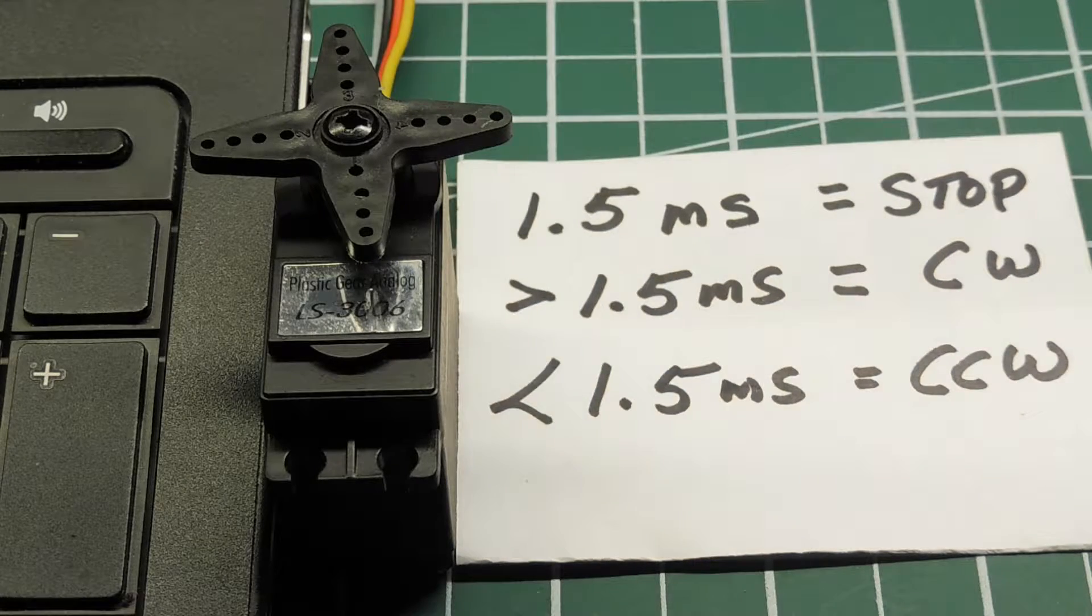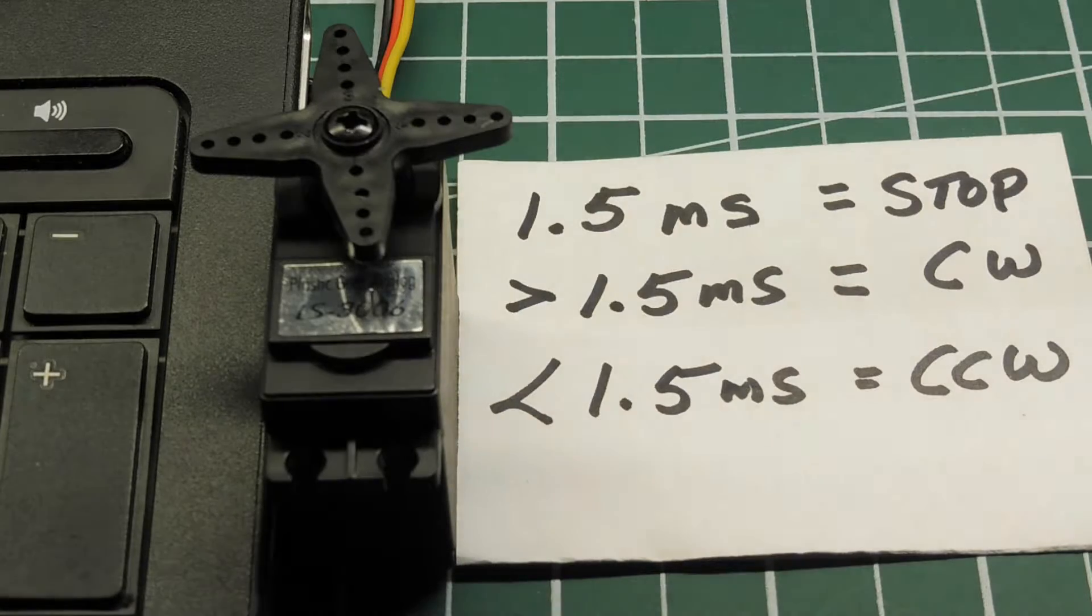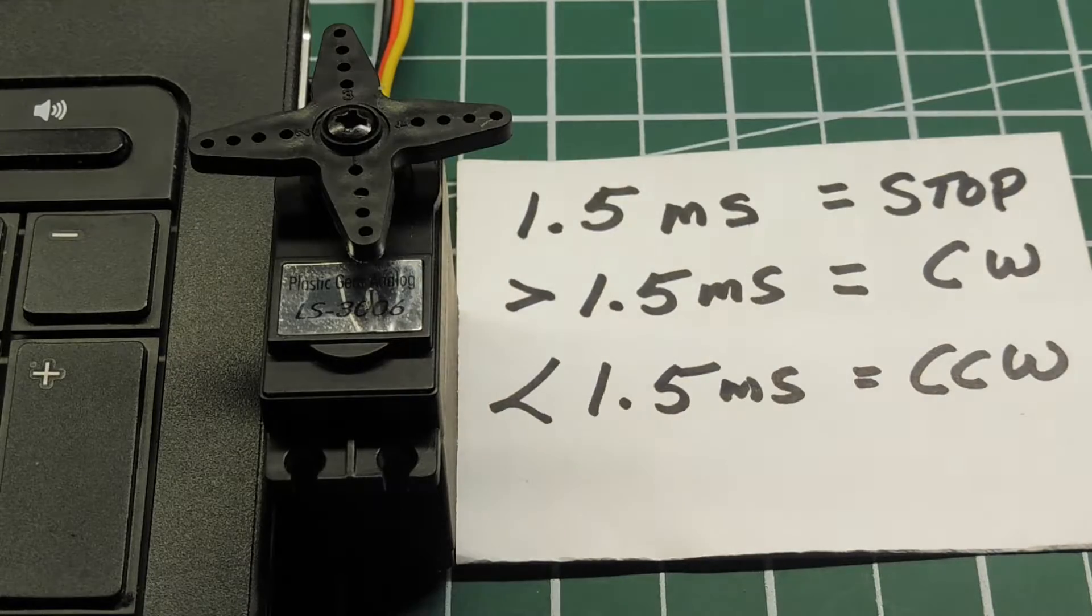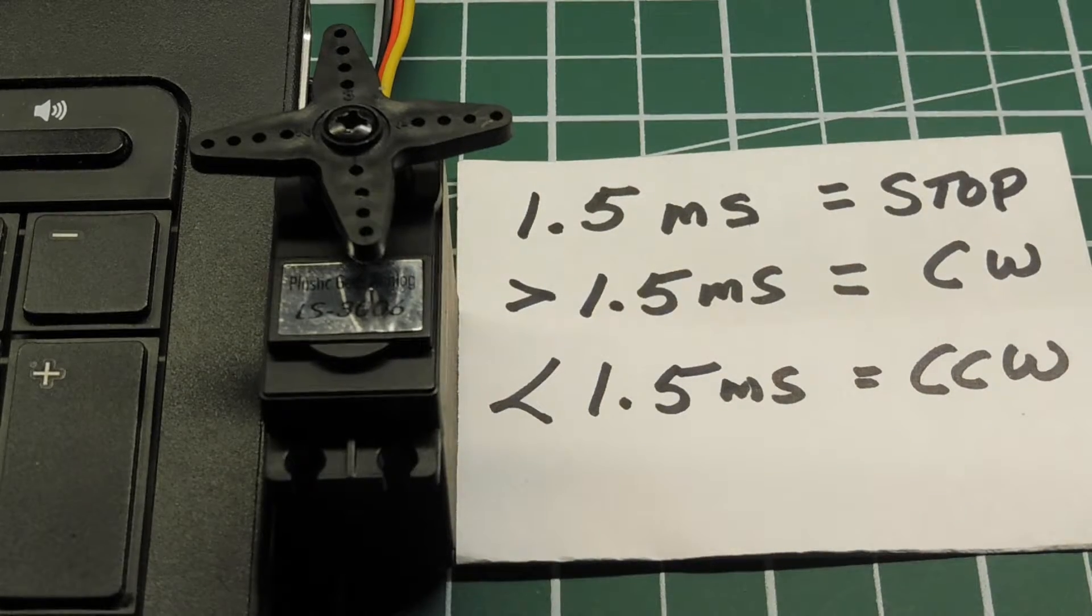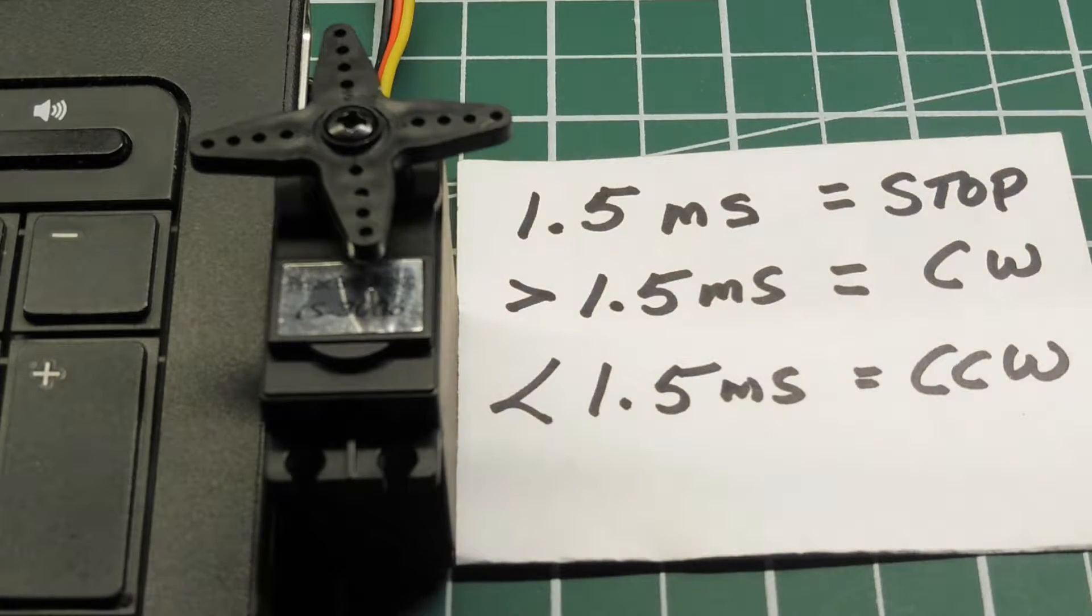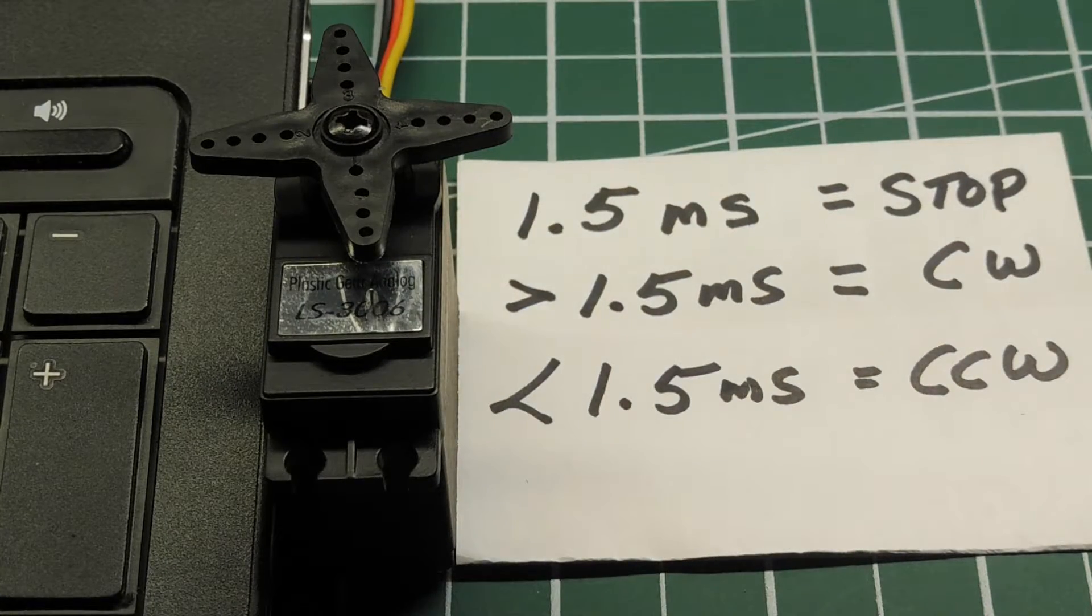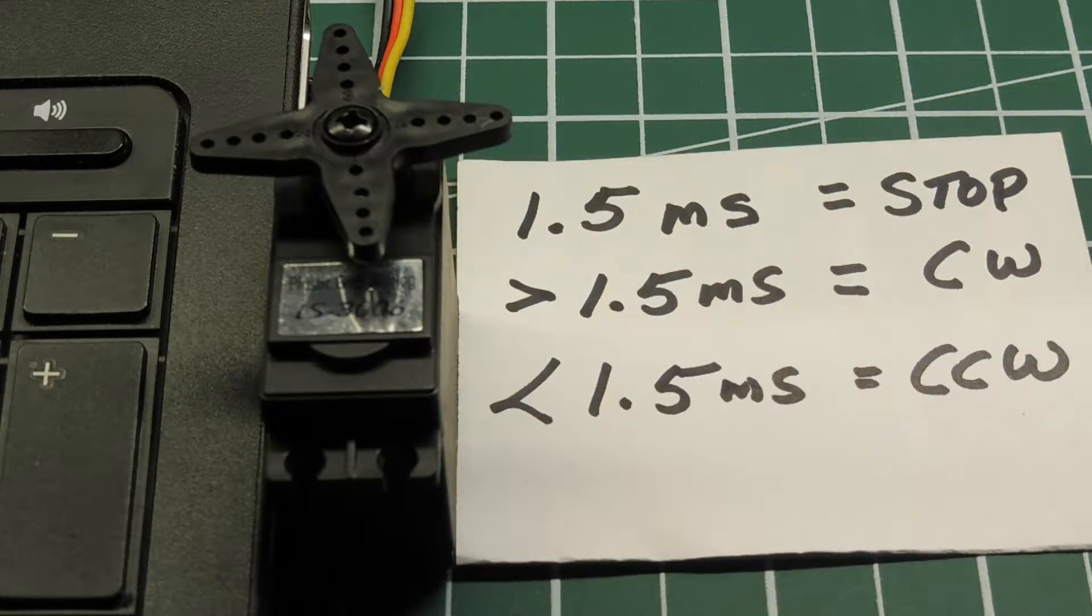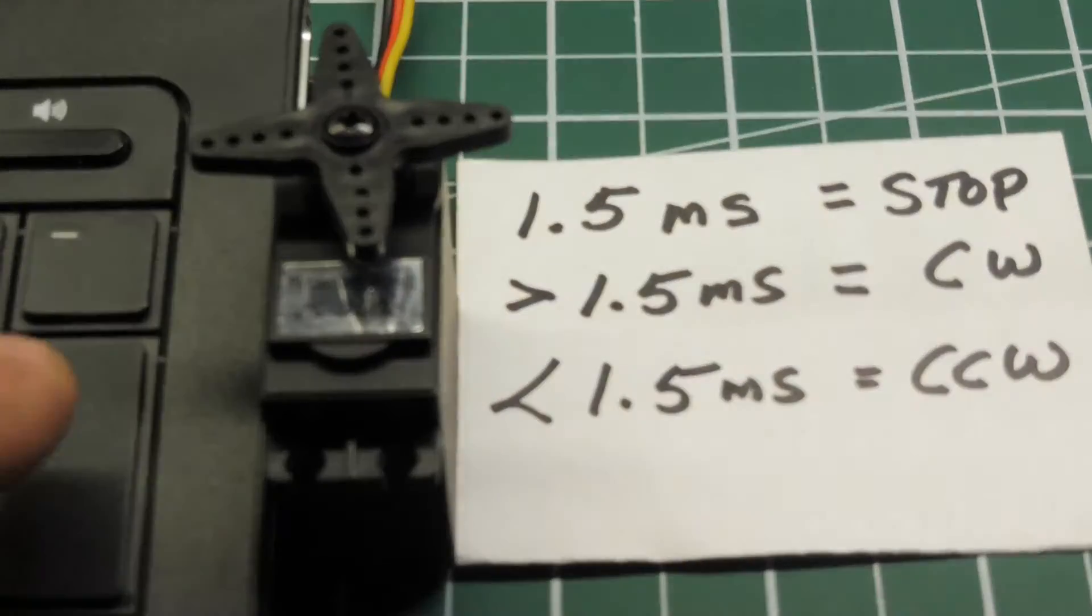Okay, I have set up a modified open loop servo, which is a continuously run motor, and right now I'm feeding it one and a half millisecond pulses, so it's in its zero degree position, and that's its stop mode. Now if I increase the pulse width greater than one and a half milliseconds, the servo motor will turn clockwise, and if I decrease the pulse width less than one and a half milliseconds, the servo will turn counterclockwise, and I'll show you that.